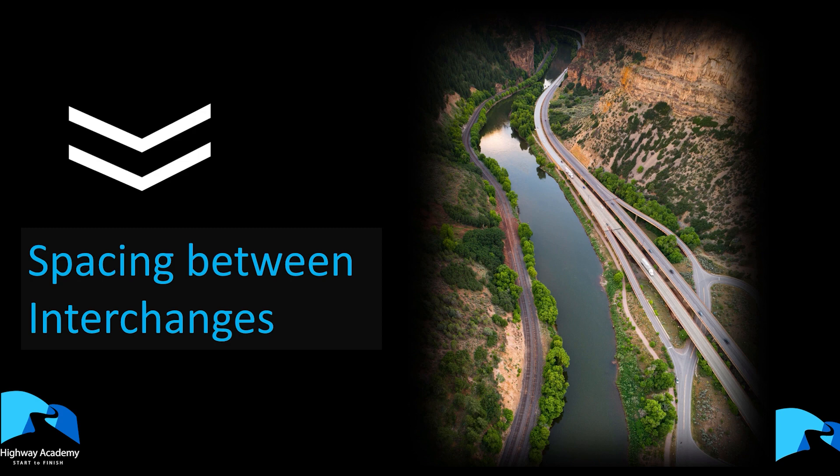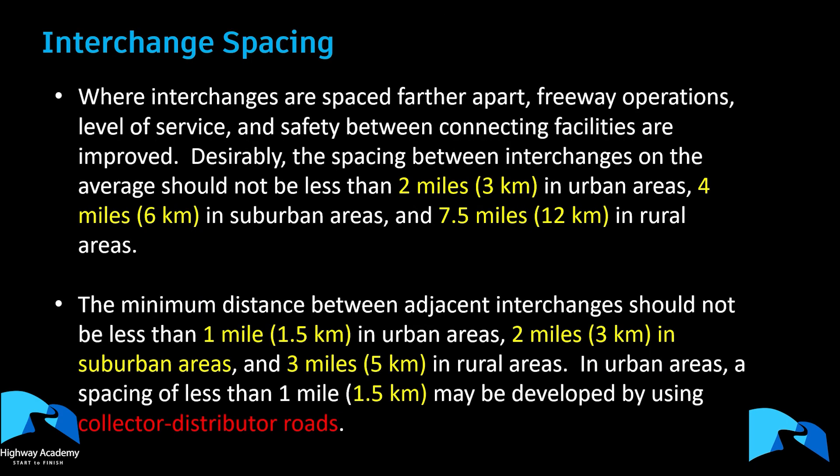When considering interchange spacing on freeways, the minimum desirable distance in an urban area is three kilometers, roughly two miles. In suburban or peri-urban areas, that's six kilometers, or four miles. Finally, in rural areas you want them at 12 kilometers apart.